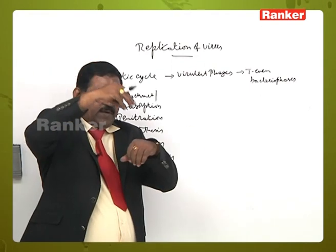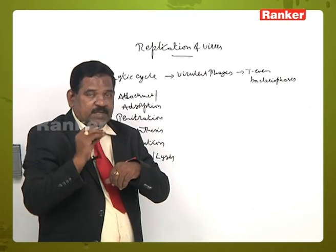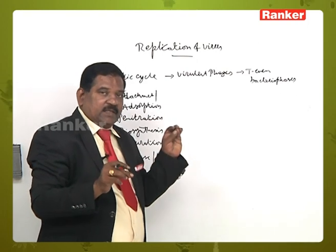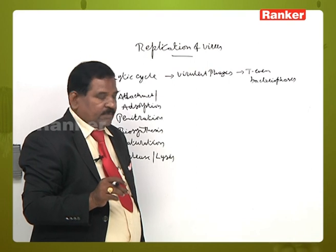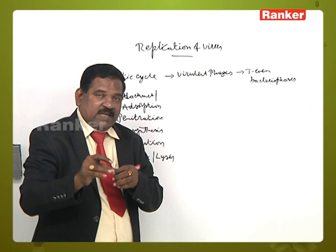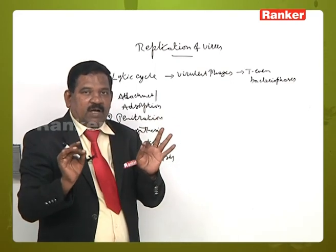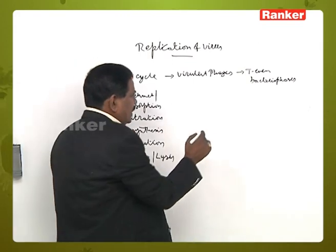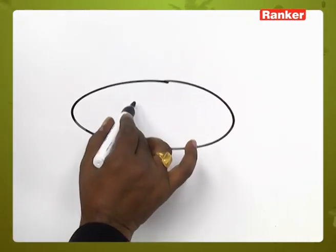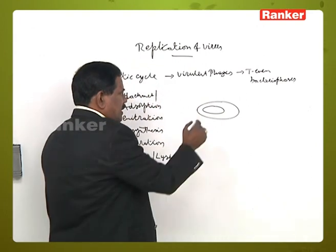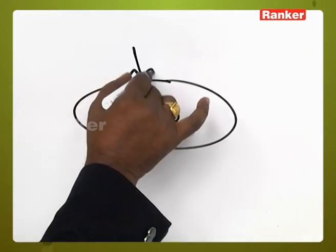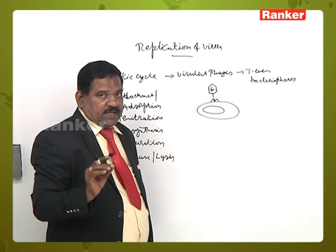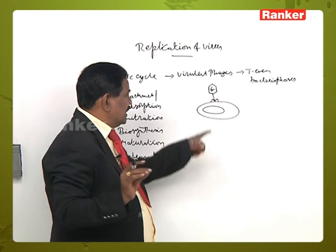First, the bacteriophage attaches on the surface of the bacterium — that is called attachment, also called adsorption. The bacteriophage attaches at a specific site only, with the help of its tail fibers.